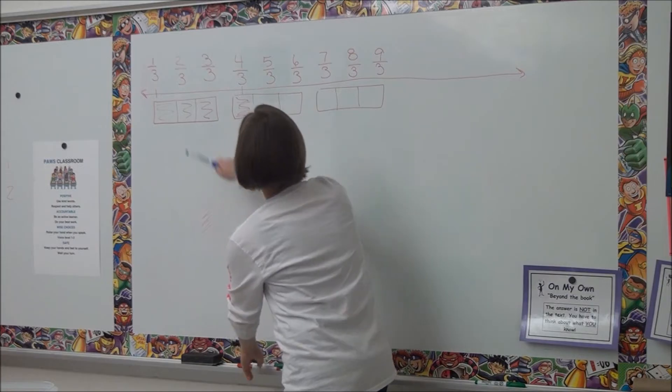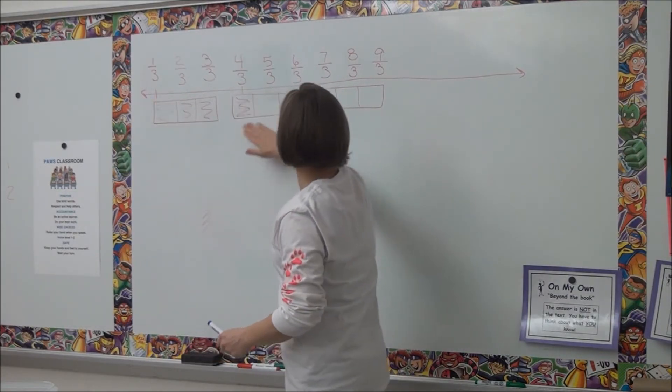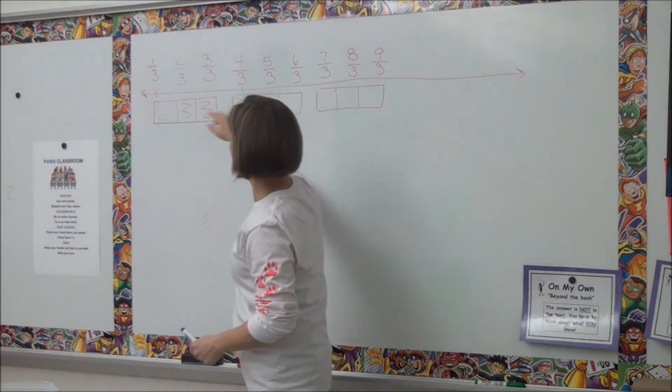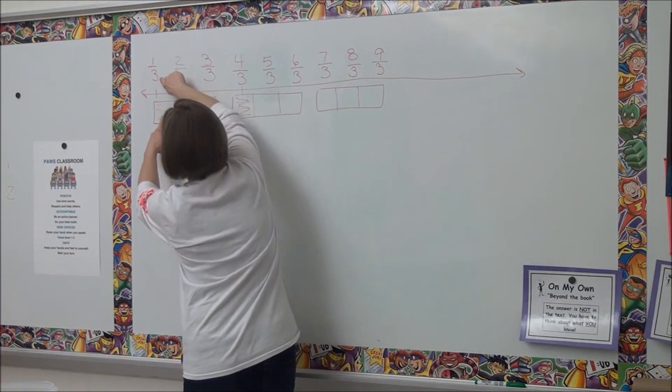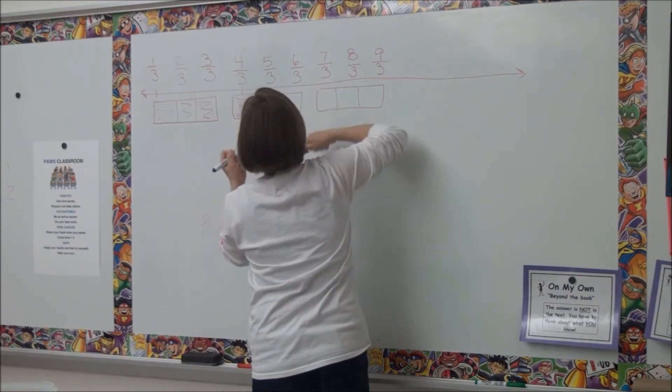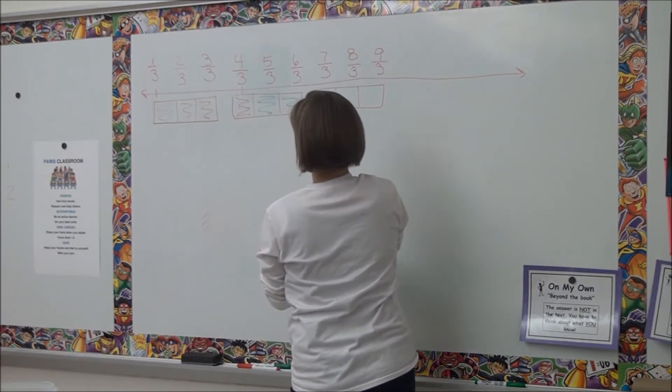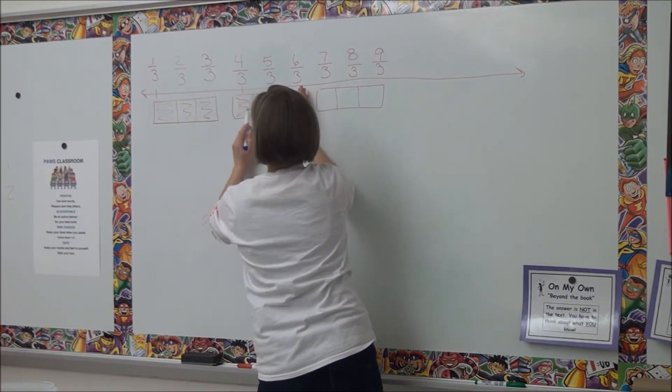Let's just practice counting this once more, and then we're going to count a different way. As you say a third, I'm going to color a third in up here. Ready? One third, two thirds, three thirds, four thirds, five thirds, six thirds. So what? Six thirds.